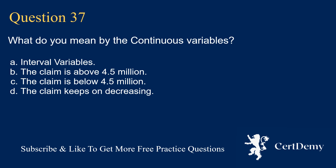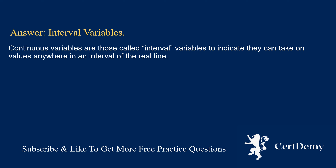Question 37. What do you mean by continuous variables? Options: interval variables; the claim is above 4.5 million; the claim is below 4.5 million; the claim keeps decreasing. The answer is: interval variables. Continuous variables are called interval variables to indicate they can take on values anywhere in an interval of the real line.